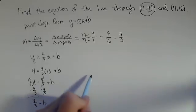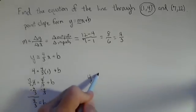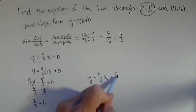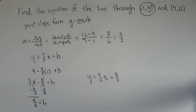So our linear function is y equals 4 thirds x plus 8 thirds, and we have it there in point slope form.